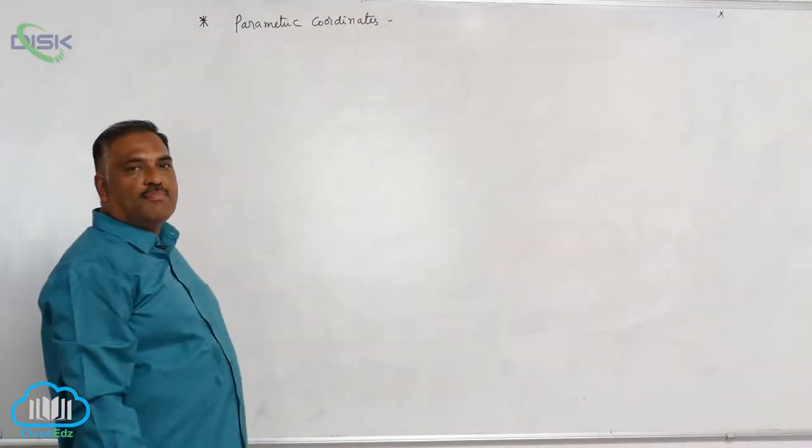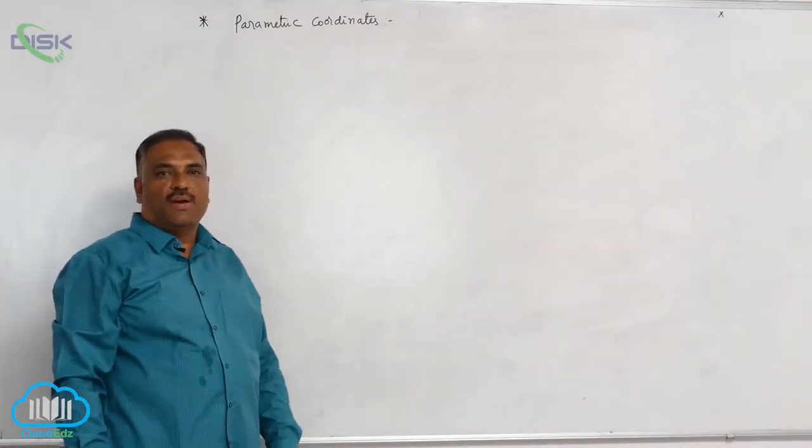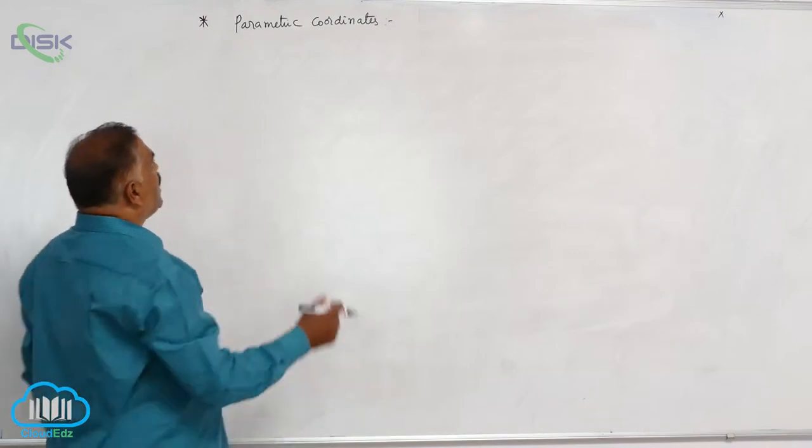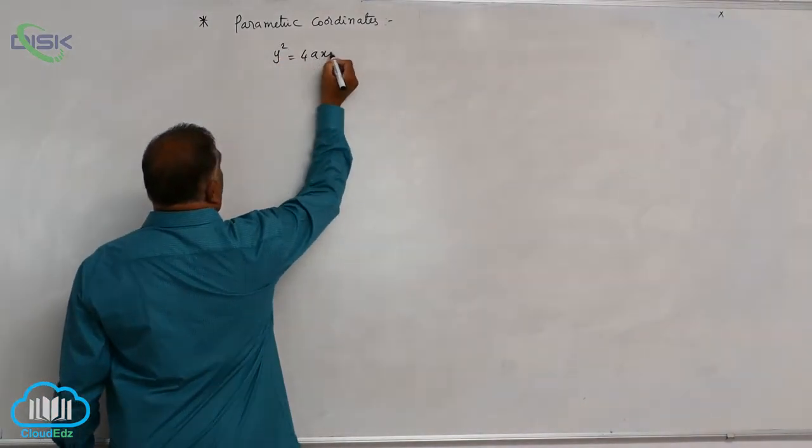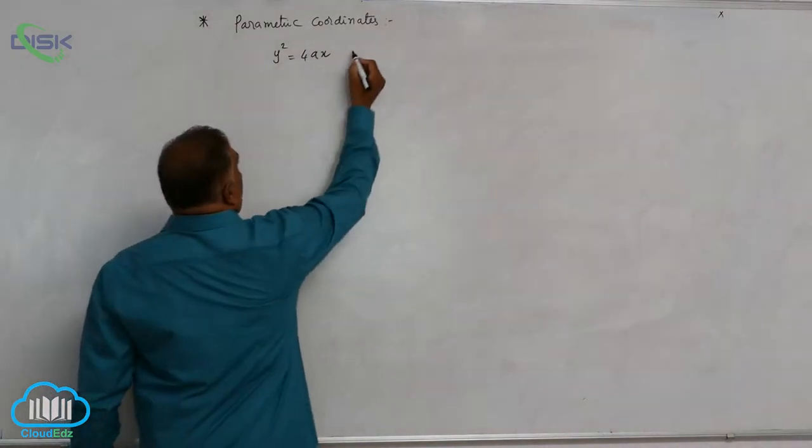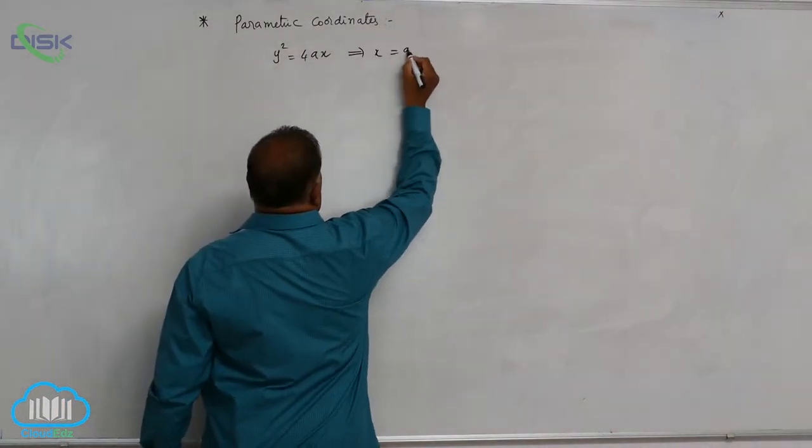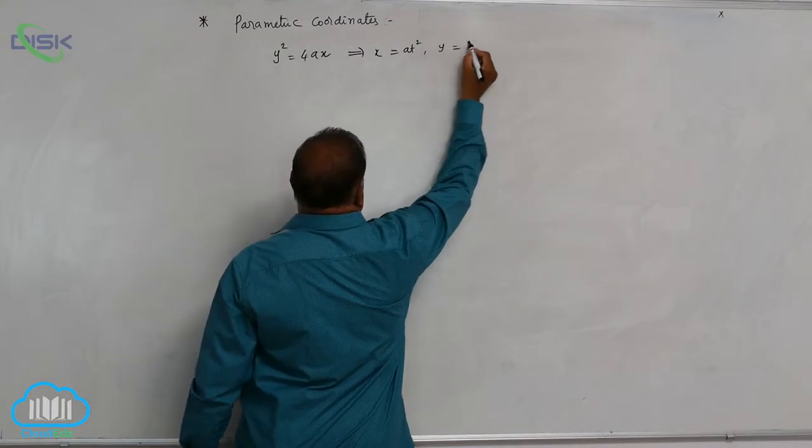Let us discuss the second part of the parabola, that is parametric coordinates. If you take the standard equation of parabola y square equal to 4ax, you observe that x is equal to at square comma y is equal to 2at.